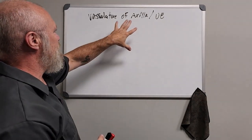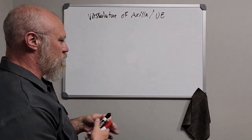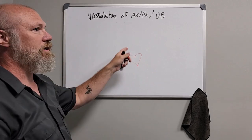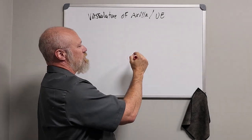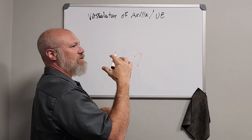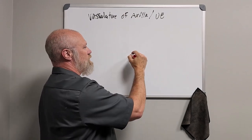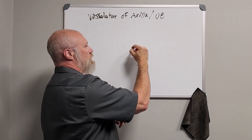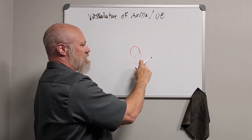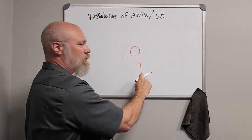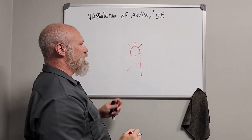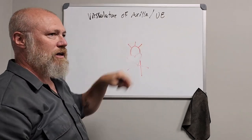Let's get into the vasculature of the upper extremity — quick review. The heart is going to eject from the left ventricle through the aortic arch, which continues down as the thoracic aorta and then the abdominal aorta going through the diaphragm. But importantly for the upper extremity, there are three branches off of the aortic arch.